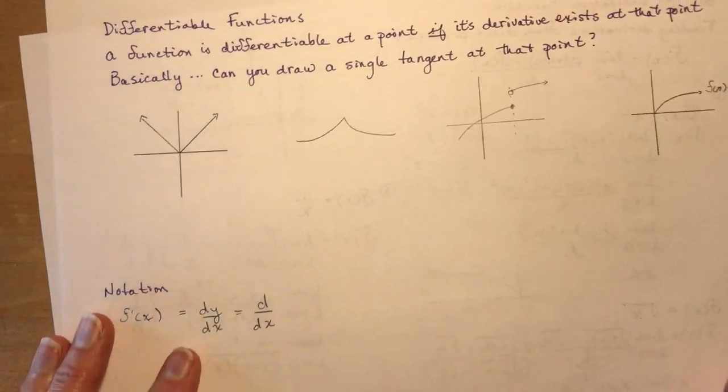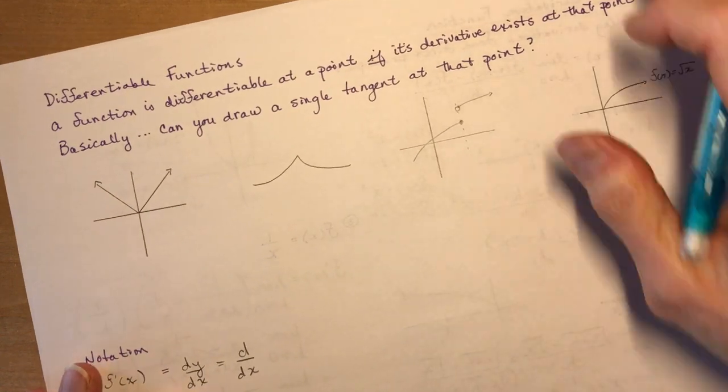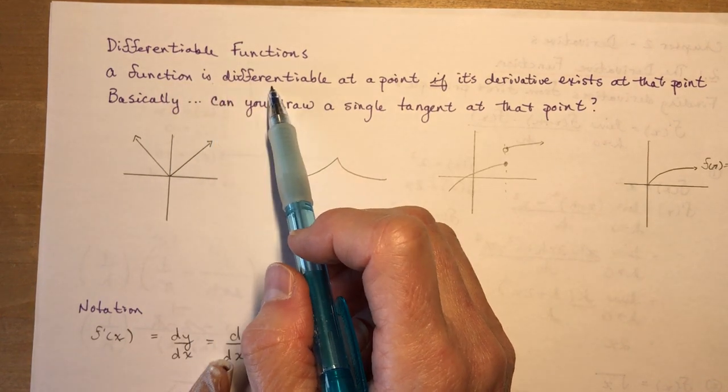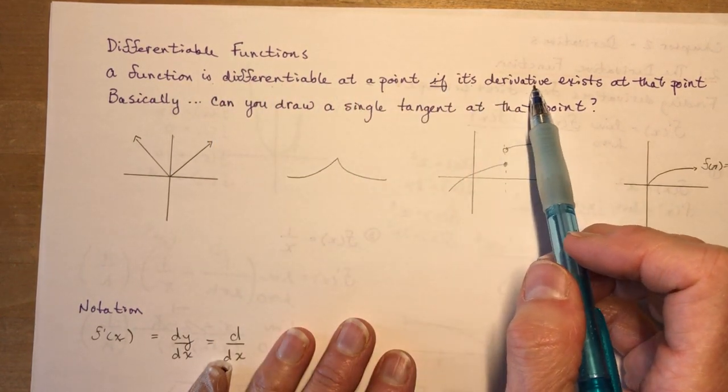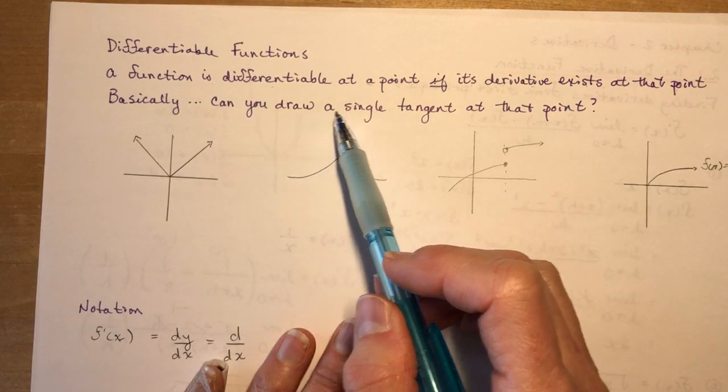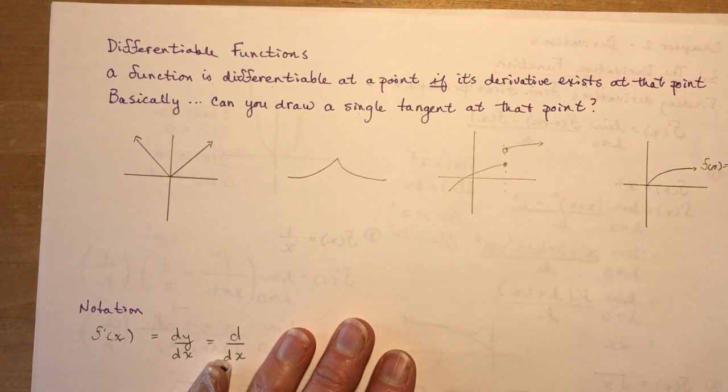The last thing we're going to talk about in this section is what is a differentiable function. A differentiable function is differentiable at a point if its derivative exists at that point. Basically, can you draw a single tangent at that point?